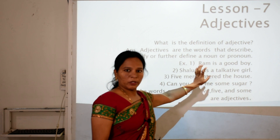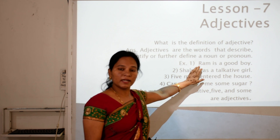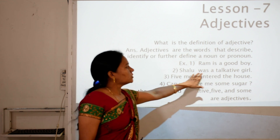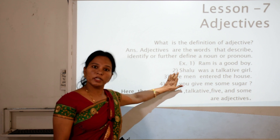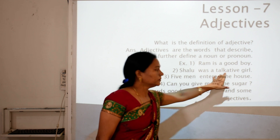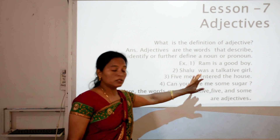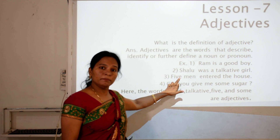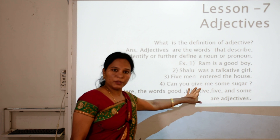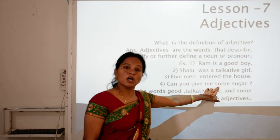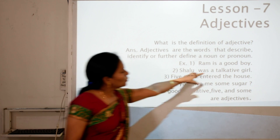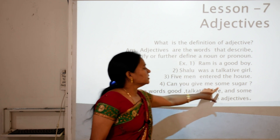For example: 'Ram is a good boy.' Here we are describing the quality of Ram by telling that he is a good boy, so 'good' is an adjective. 'Shalu was a talkative girl' — here 'talkative' is an adjective. 'Five men entered the house' — the word 'five' tells us how many men entered, so 'five' is an adjective. 'Can you give me some sugar?' — the word 'some' tells us how much sugar. So good, talkative, five, and some are adjectives.